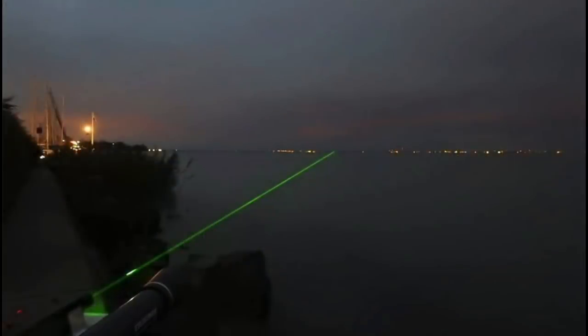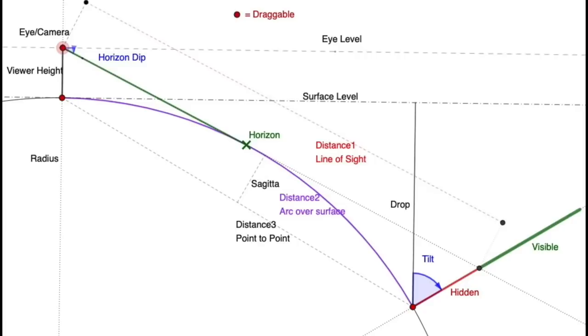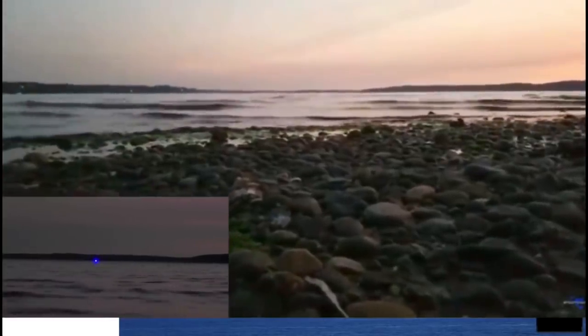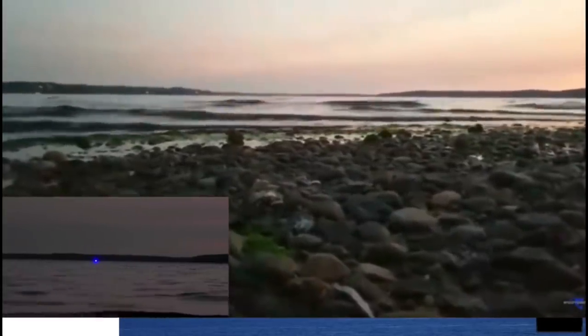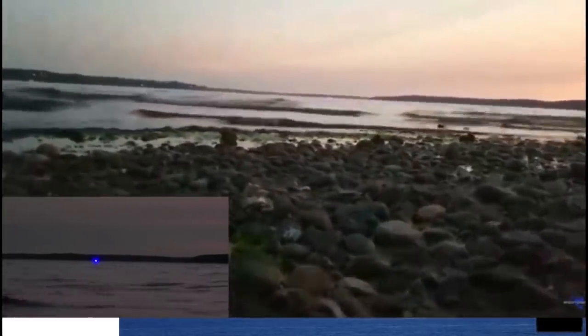In the flat Earth community, a popular experiment is to shine a laser from a low height across a body of water and see if that laser is visible on the other side. This seems like a reasonable test: if you put the laser and the camera both at three feet above the water and they are six miles apart, the laser should be hidden behind several feet of the curve of the Earth. And yet, there are all these videos showing people doing this test — sometimes over much longer distances — and in all these videos, you can see the laser. So what does this mean? Is the Earth flat? No. Of course not. The laser is simply bending around the curve of the Earth due to refraction.